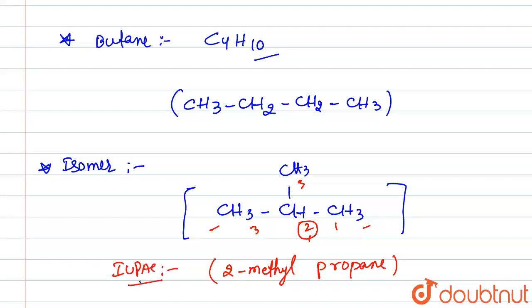So the IUPAC name for this is 2-methylpropane. So it is an isomer of butane. Thank you.